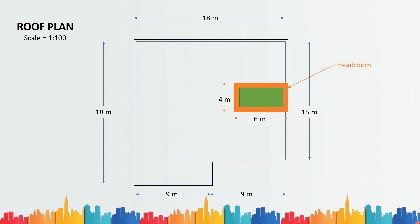Next, we have to show the overhead water tank. Here I have taken it as a rectangular tank of dimension 3 meters by 4.5 meters, which is a little less than the size of the headroom, which was 6 meters by 4 meters. This one is a triangular shape. However, there are various shapes and sizes which are used, so whatever is the case, you have to show that.